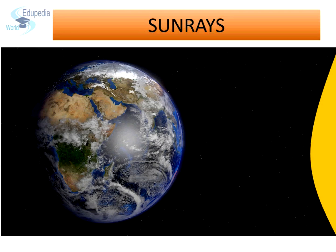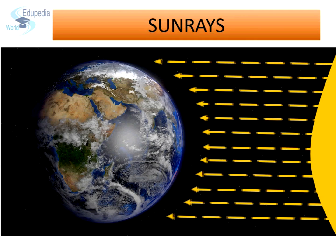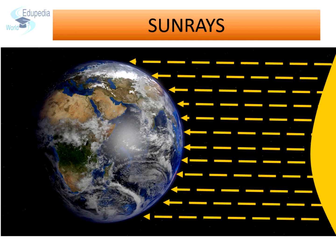Light always travels in a straight line unless it is deflected by any object. The earth is spherical in shape, which means that the surface of the earth is not flat but curved. Due to the spherical shape of the earth, the angle at which the sun rays fall on different parts of the earth is different. The heat received by any place depends on the angle at which the sun rays fall, and it decreases as we move from the equator towards the poles.